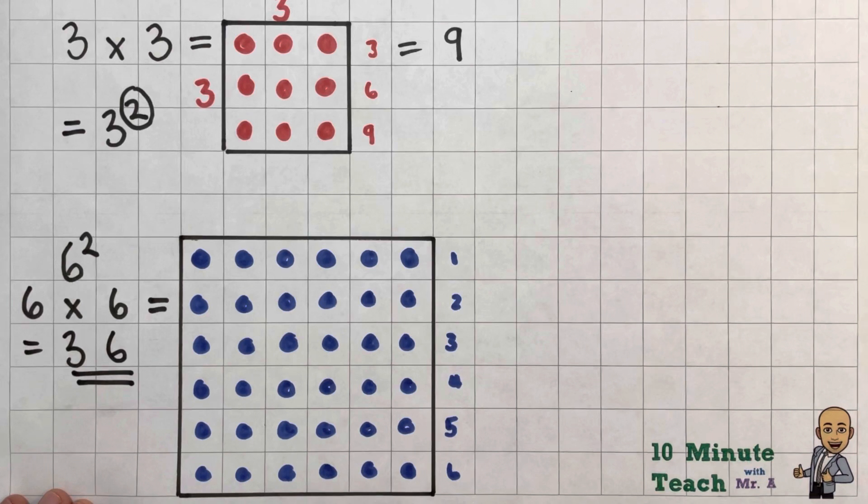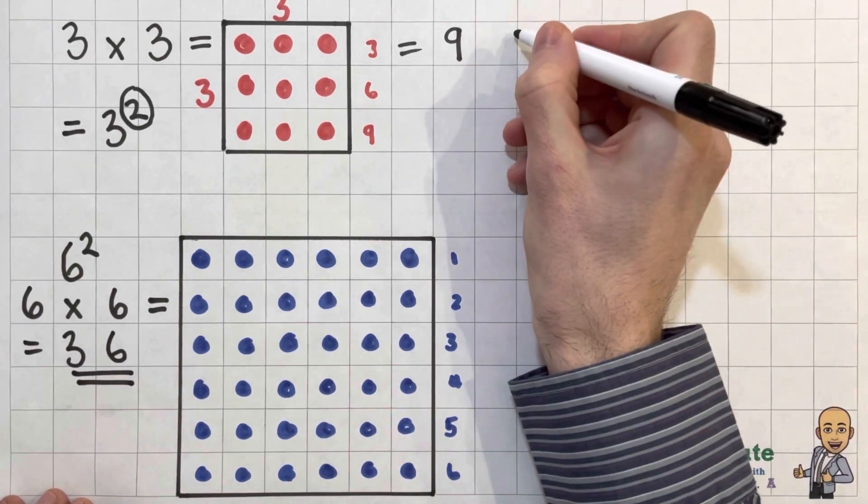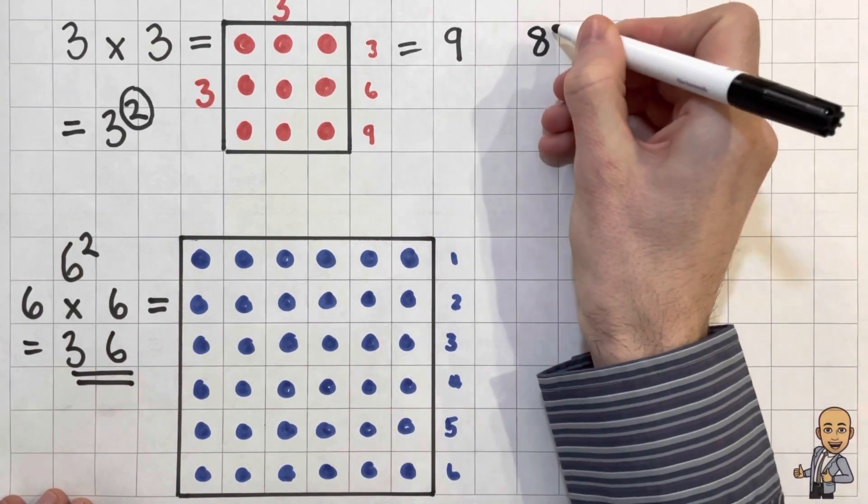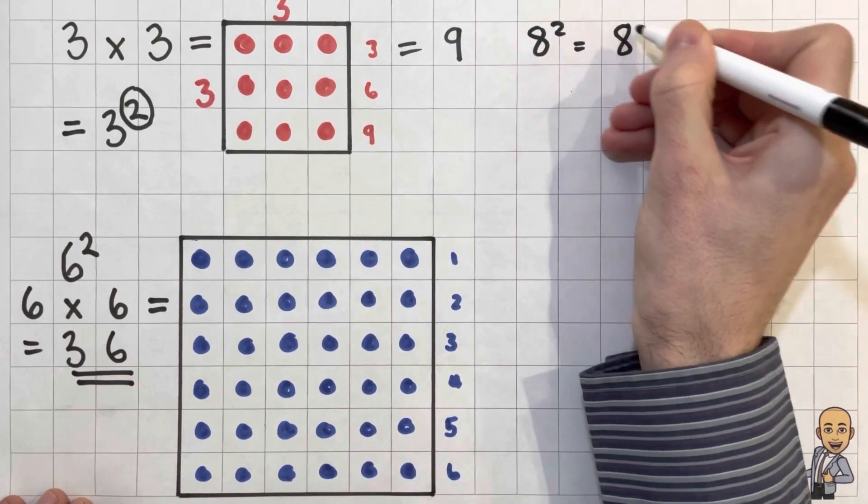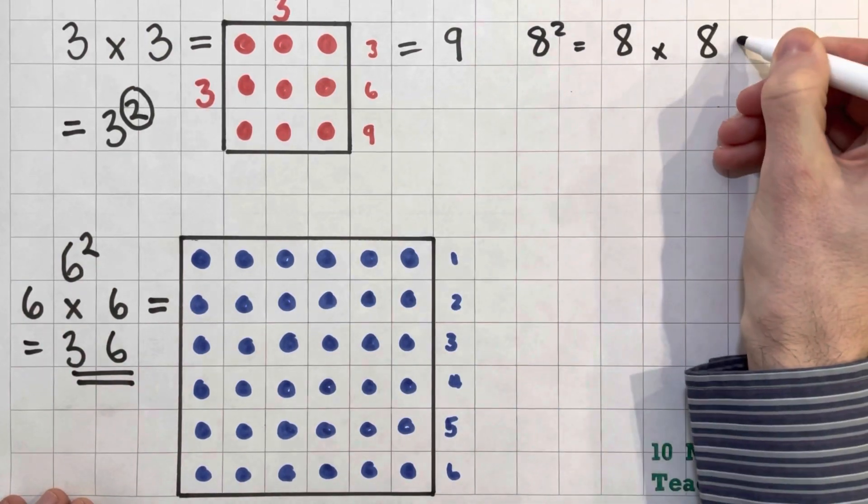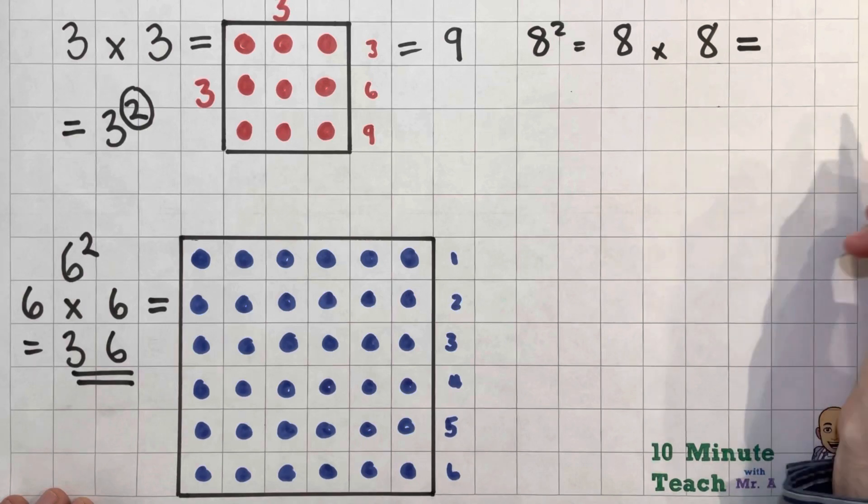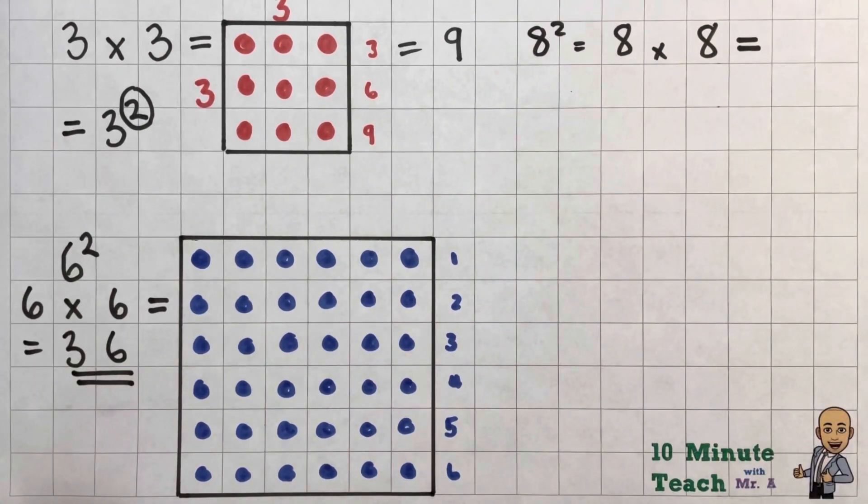Let's have a go at 1 more, shall we? And I'm going to have a go at 8 squared. So here we are. So let's do 8 squared, which equals 8 times 8, which equals, ooh, so let's have a little go at drawing this one out.